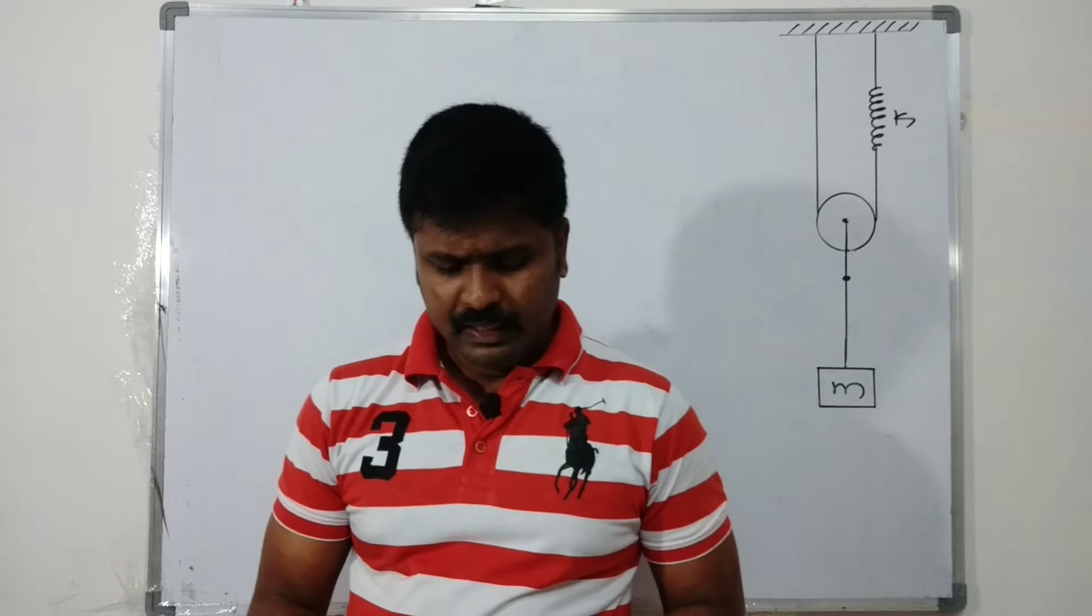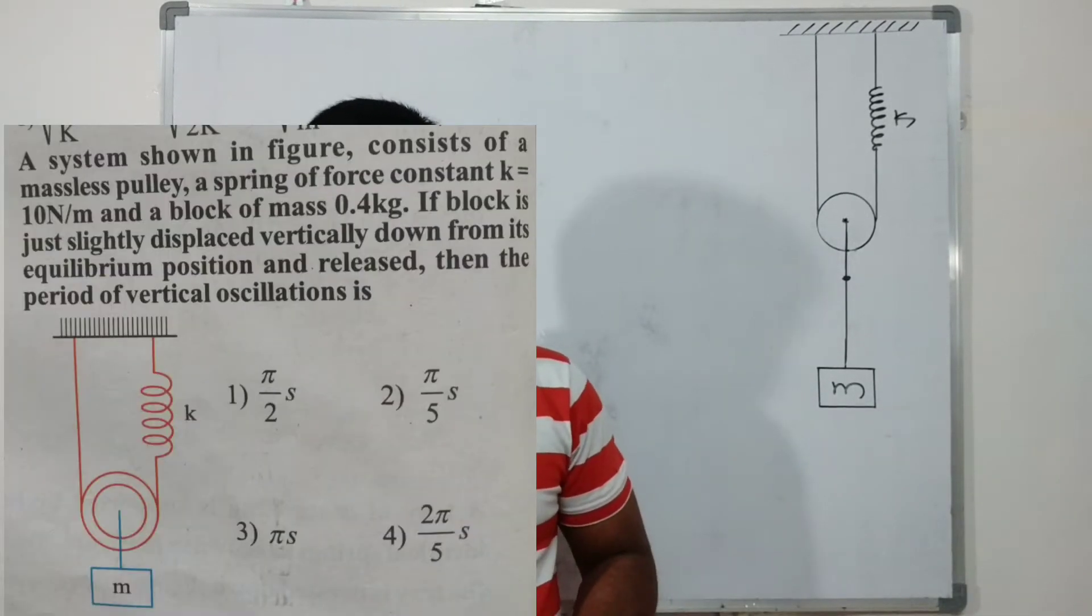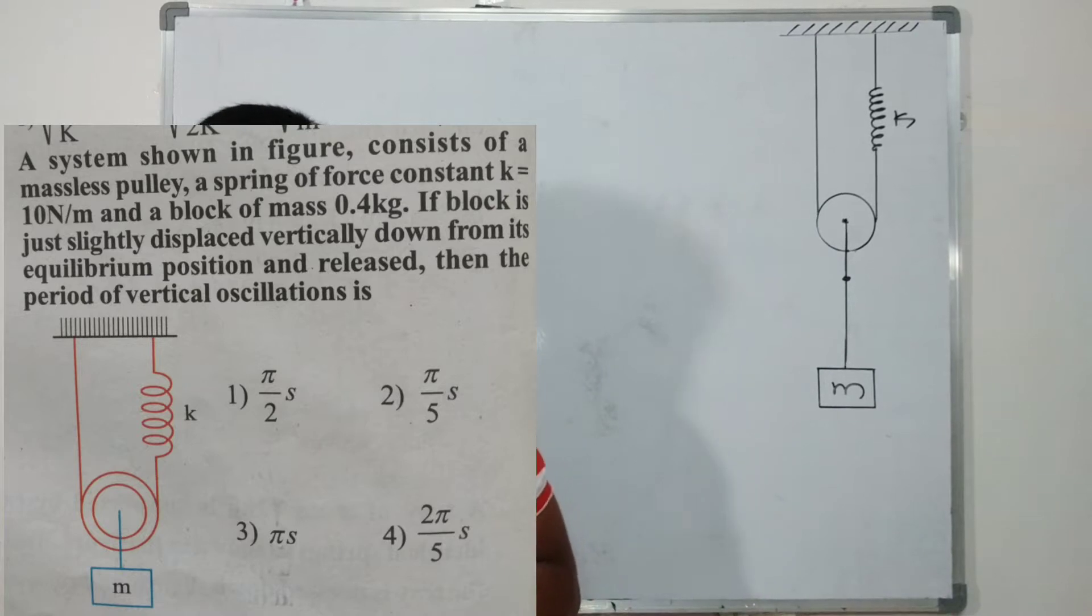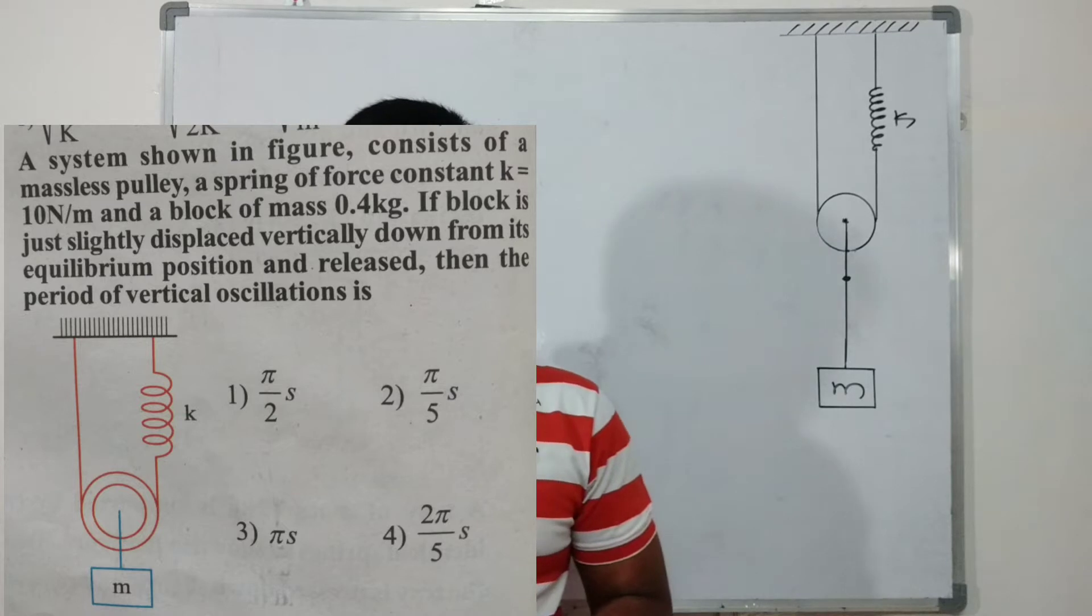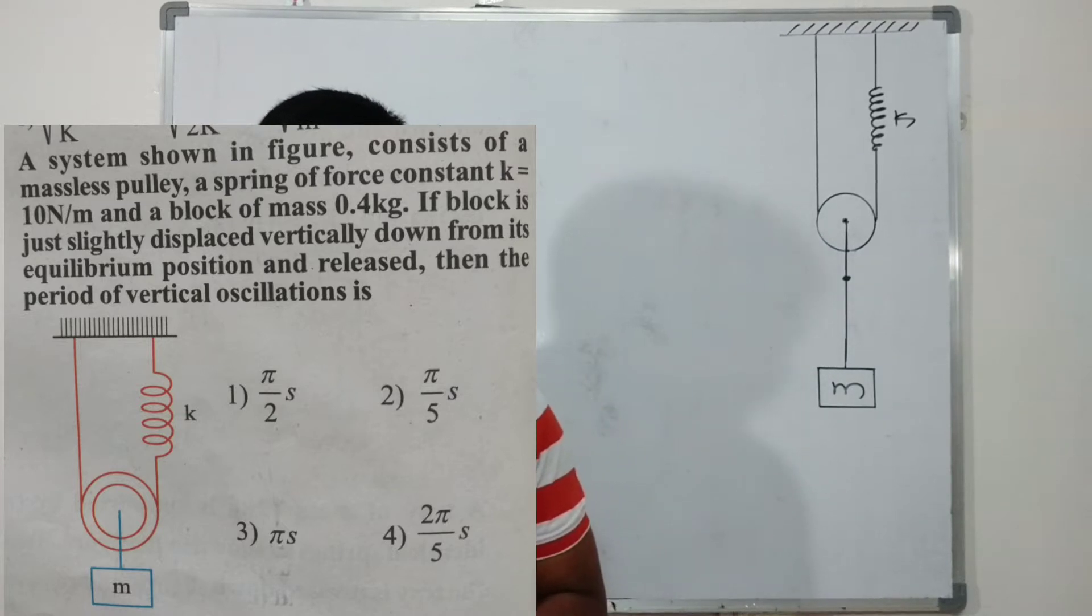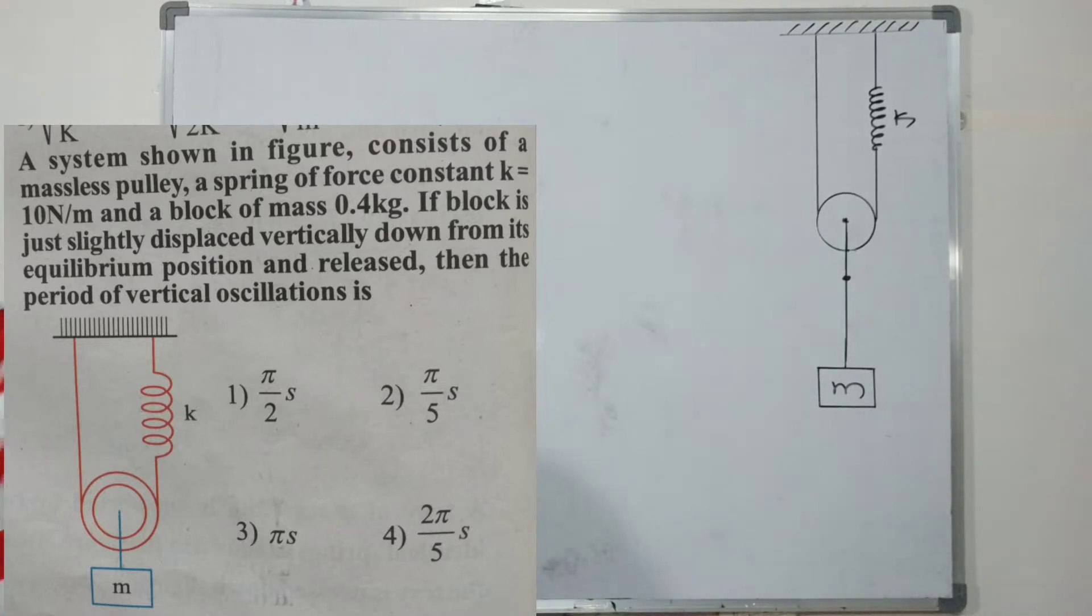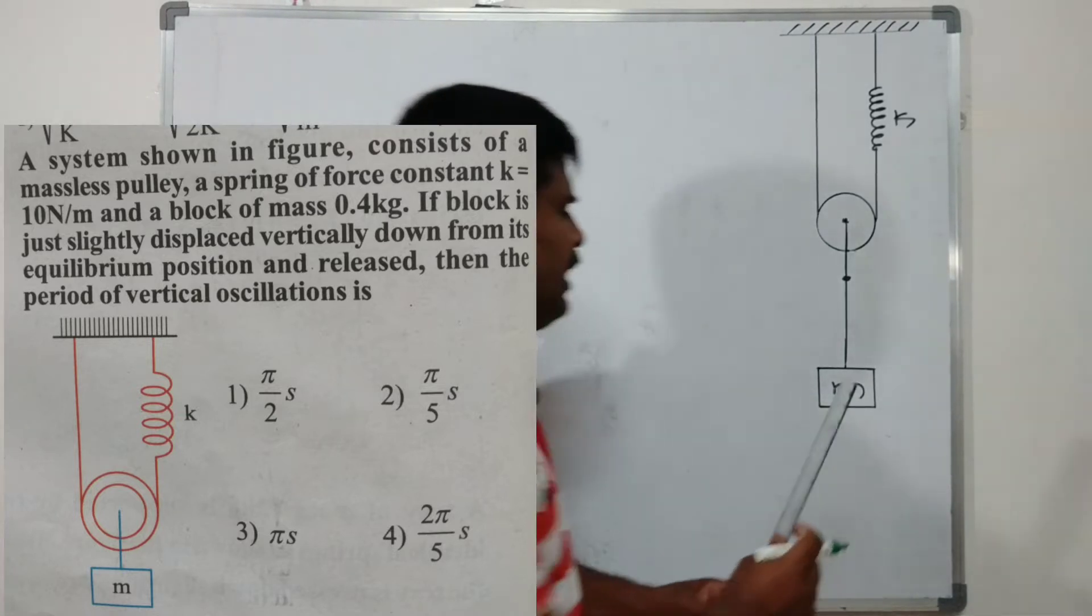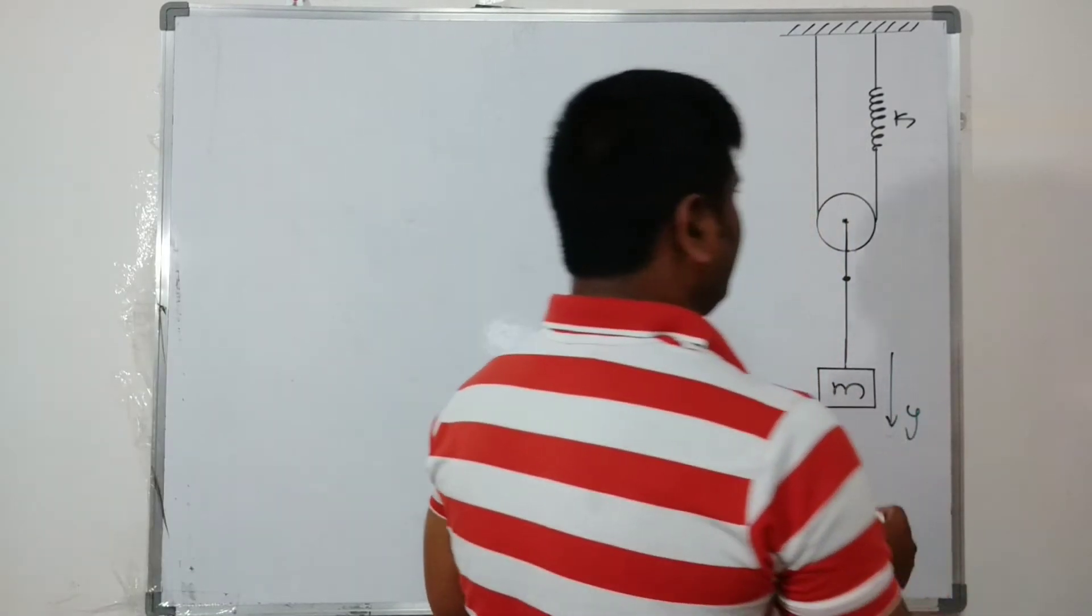Welcome back. A numerical system shown in figure consists of a massless pulley, spring of force constant k = 10 Newton per meter, and a block of mass 0.4 kg. If the block is just slightly displaced vertically down from its equilibrium position and released, then the period of vertical oscillation is to be found. Here y is the vertical displacement like this.